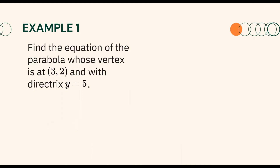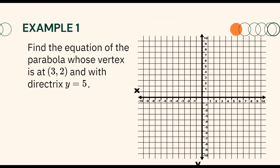Let us have some examples. Find the equation of the parabola whose vertex is at (3, 2) and with directrix y equals 5. If needed, you may graph the given to easily visualize the problem. Since the vertex is at (3, 2) and the directrix is the line y equals 5, remember that the distance between the vertex and the directrix is p units.